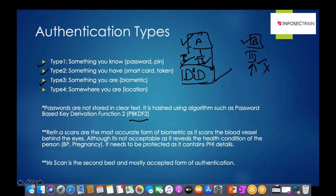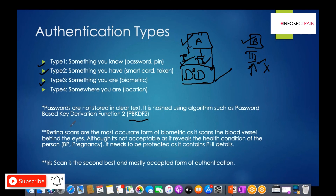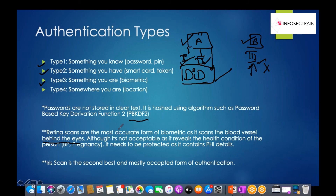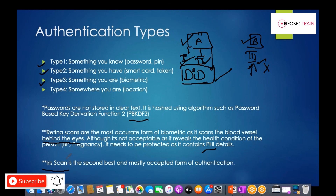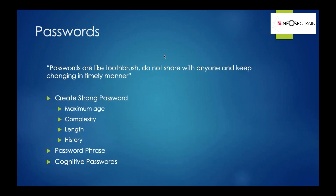From a Type 3 biometric perspective: retina scans are the most accurate form of biometric authentication because they scan the blood vessels behind the eyes, which are unique. However, retina scans are not acceptable because scanning those blood vessels can reveal health conditions like blood pressure or pregnancy — this involves Protected Health Information (PHI). Iris scans are the second best and most accepted form of biometric authentication.